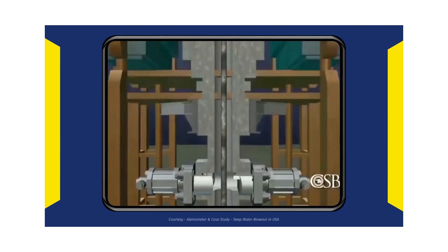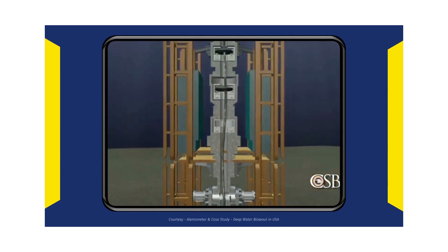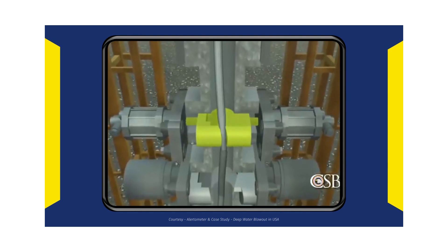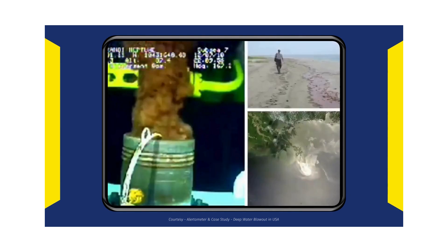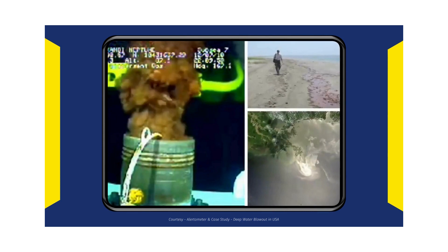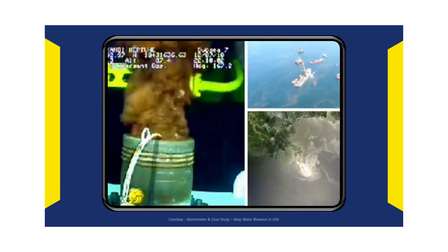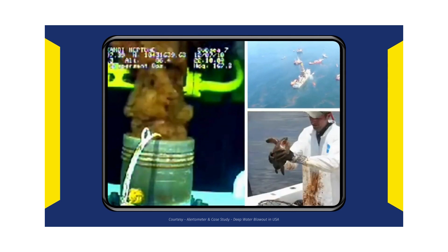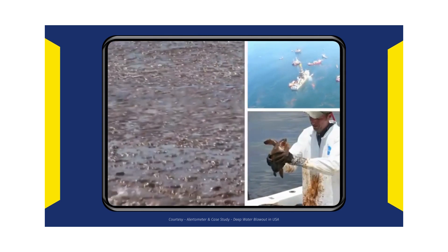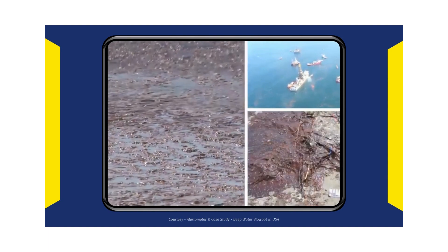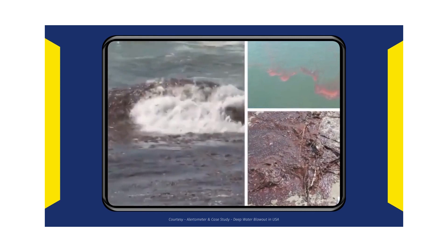In the case of the Deepwater Horizon accident, the buckled drill pipe prevented the blind shear ram from sealing the well. Oil and gas from the well flowed out of the buckled drill pipe and into the Gulf of Mexico for 87 days. A reported 5 million barrels of oil eventually spilled, causing one of the worst environmental disasters in United States history.